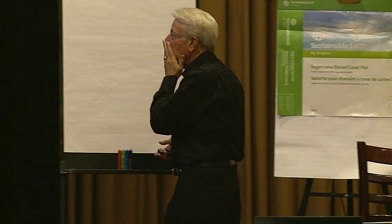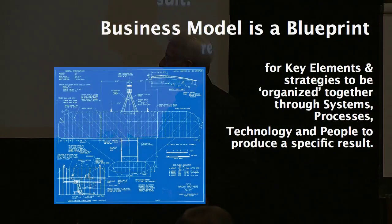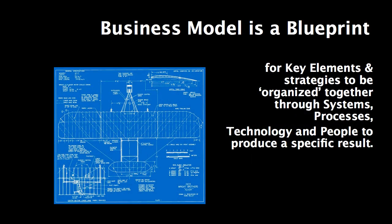This was the blueprint for the 1903 flyer — they actually made a plan and a blueprint before they built it. What a concept. So a business model is a blueprint. It's a blueprint for the key elements and strategies you're going to organize together through systems, processes, technology, and people to produce a specific result.